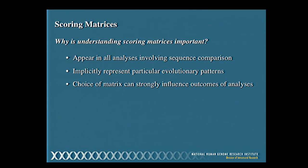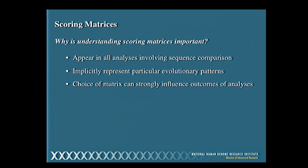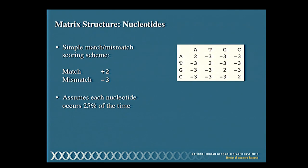Why should you care about any of this? Every single time you do any sequence comparison — whether two sequences to each other or a sequence against an entire database like GenBank — these scoring matrices are being used in the background. They appear in every single analysis involving sequence comparison. They also implicitly represent evolutionary patterns. The choice of matrix can strongly influence what results come out of your methods, so the default option may not always be the best choice.